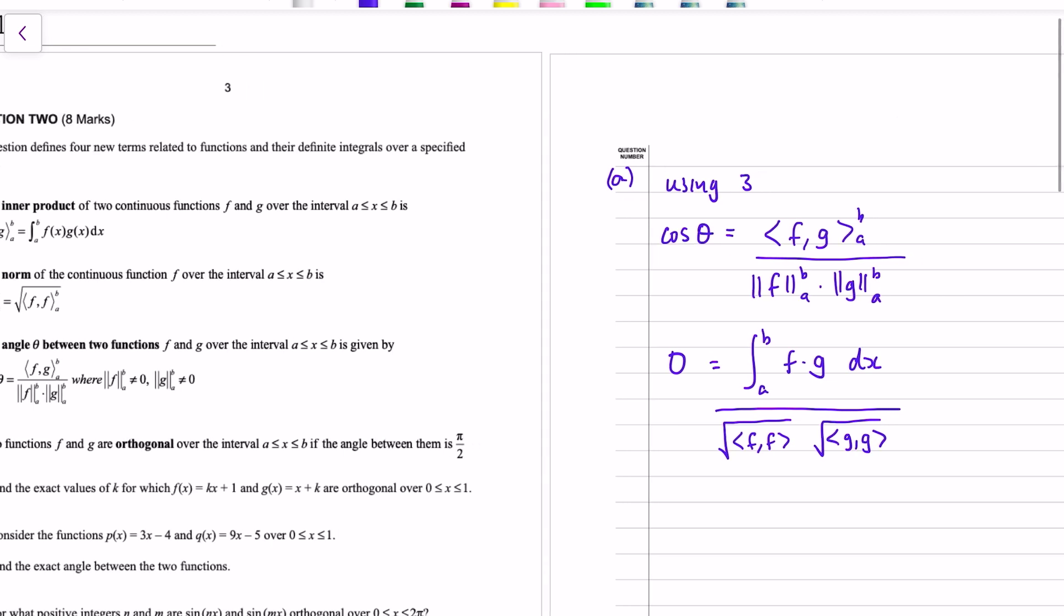So that left-hand side becomes 0. The inner product thing is integral between a and b of f times g. Which might go, oh we need integration by parts if we're integrating a product. But these functions are both linear functions, so we can just expand that product. And then we're dividing by the norm of f and the norm of g.